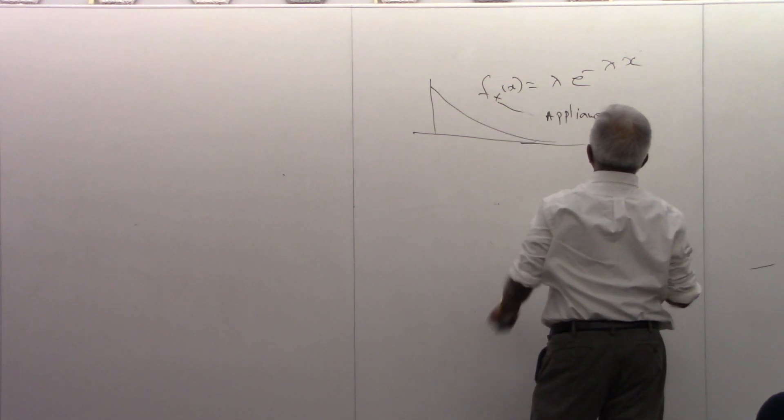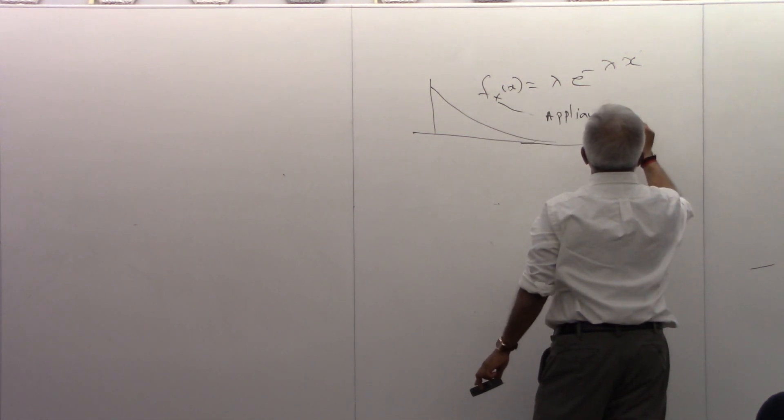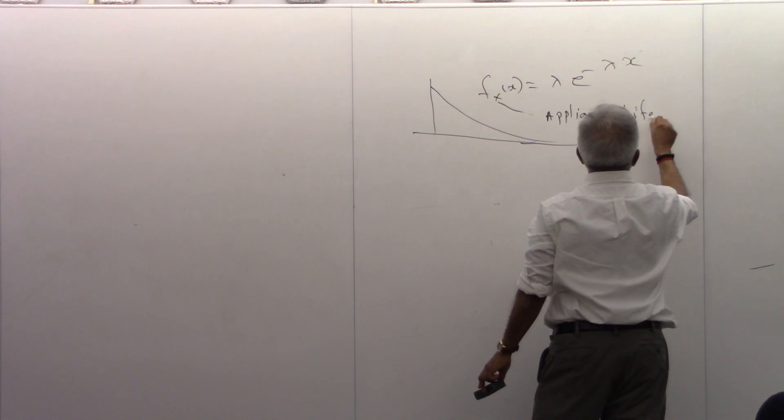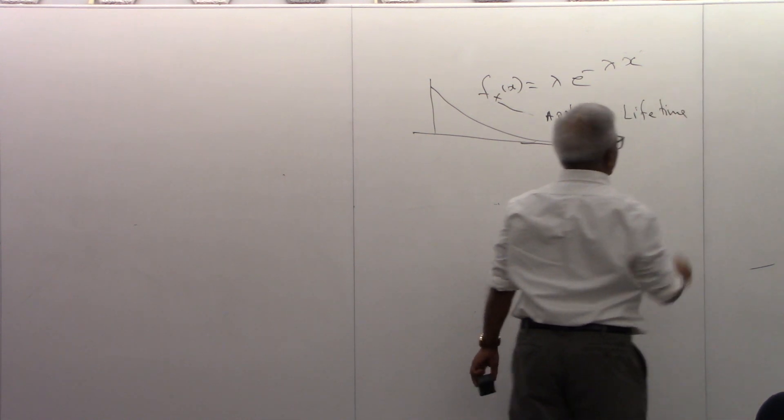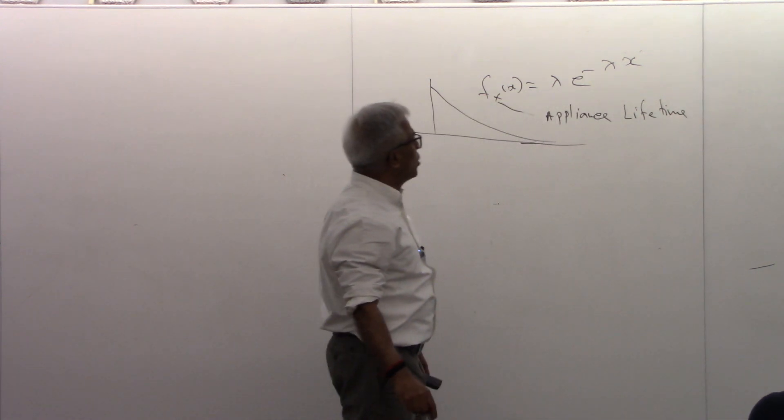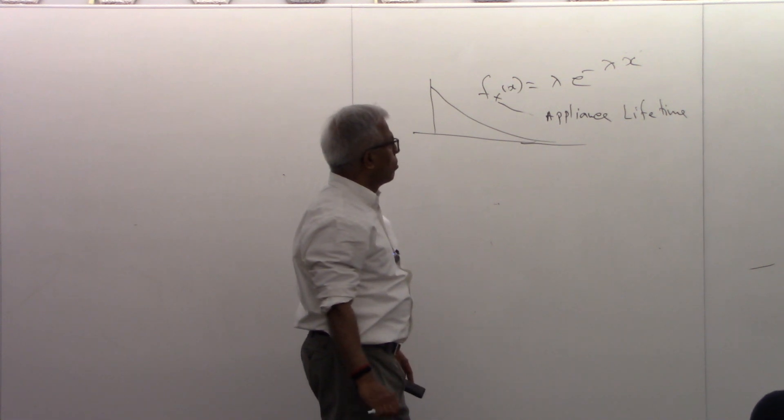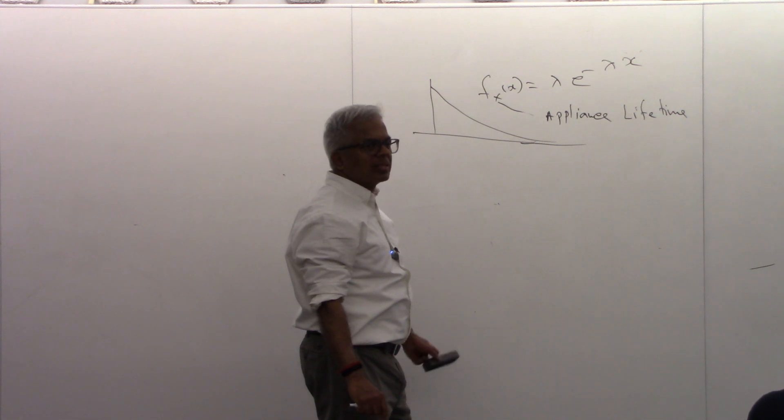Equipment lifetime. Appliance lifetimes are usually modeled by exponential distributions sometimes. This random variable has memoryless property.